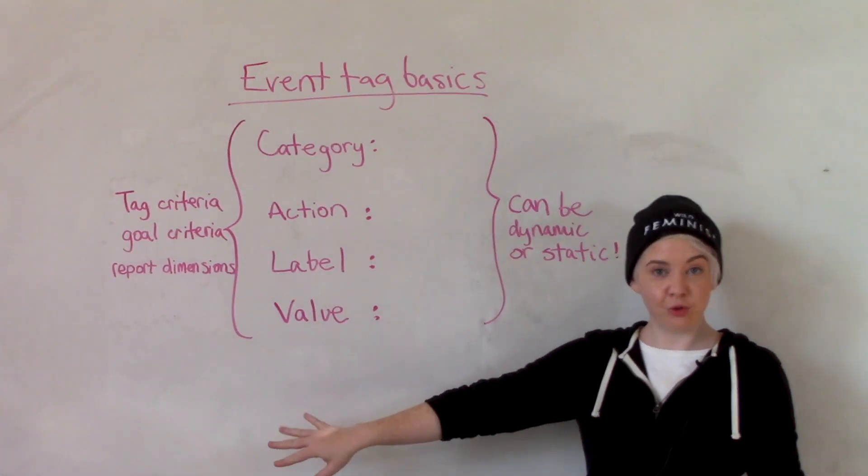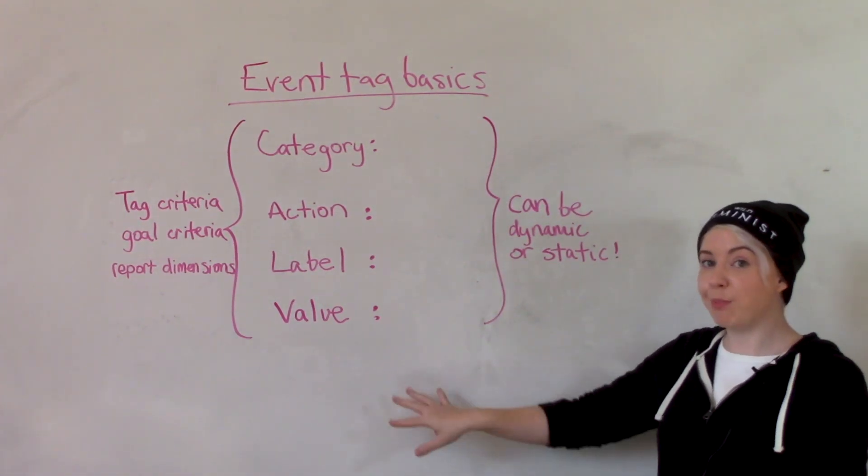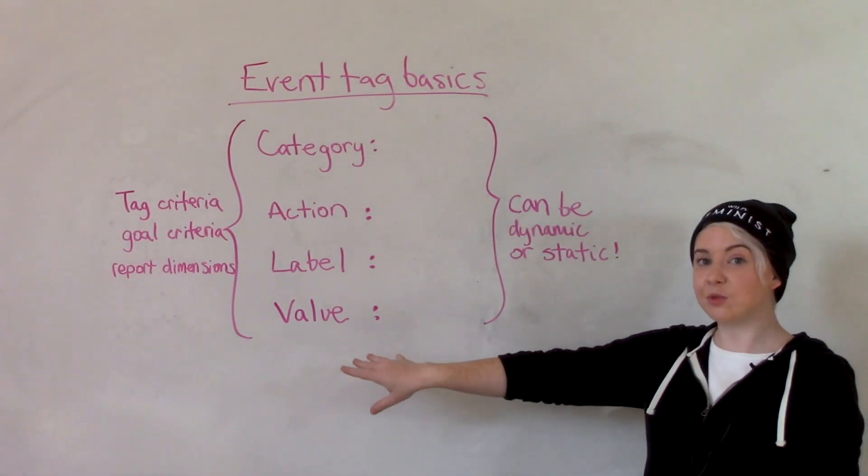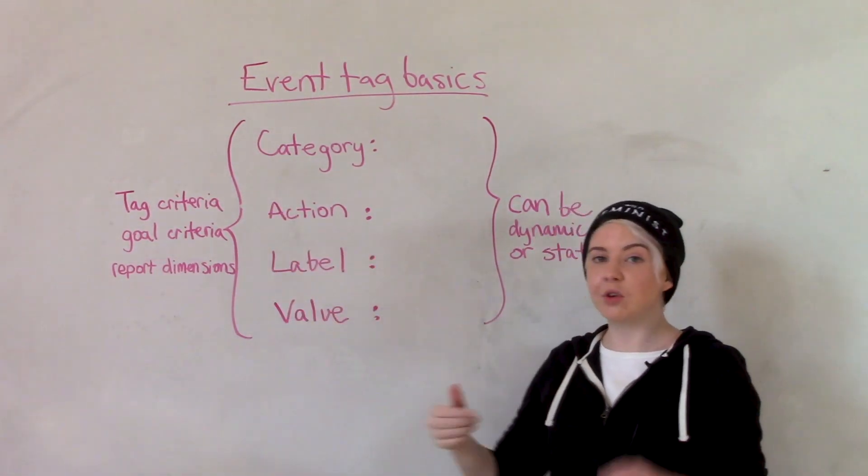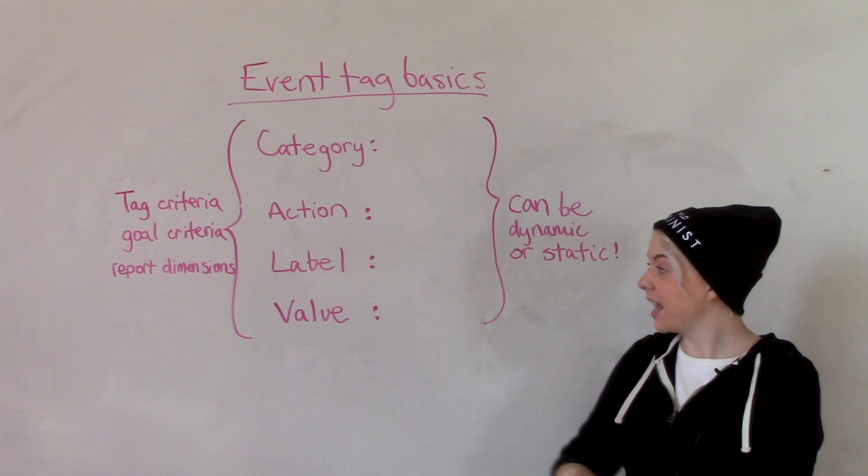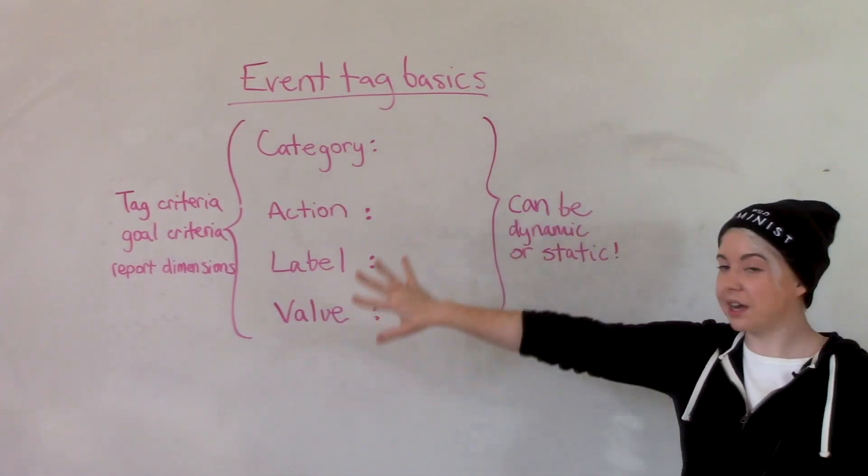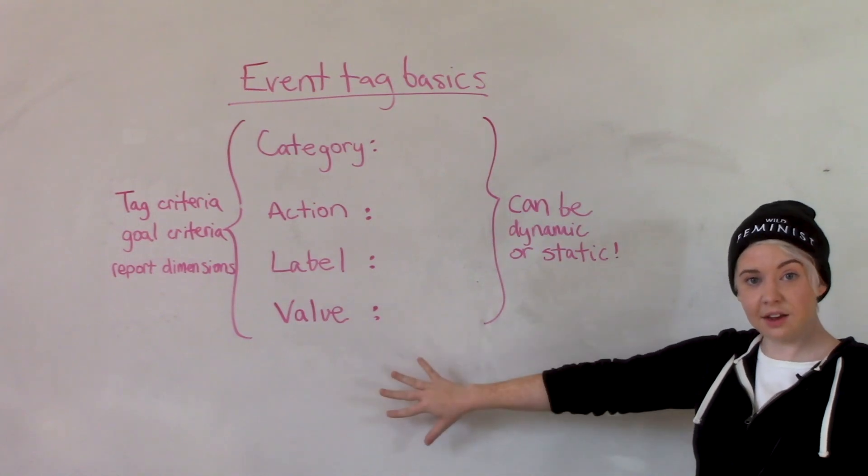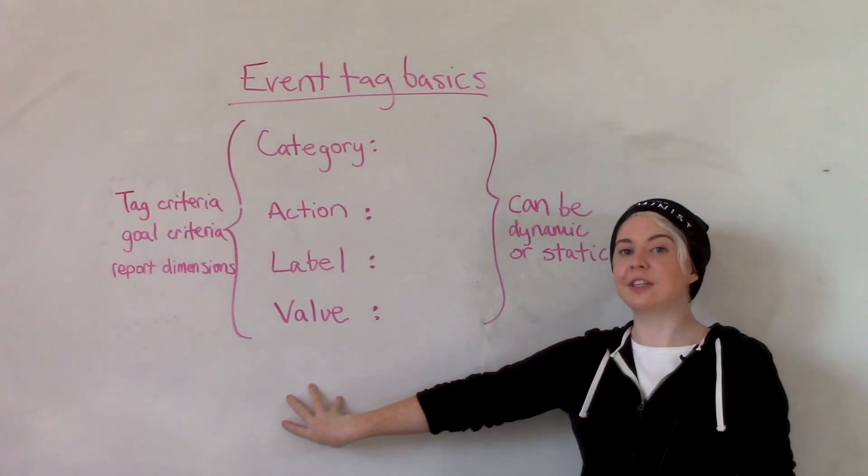Today, I'm not going to talk about triggers. I'm just going to talk about events. Event tags are the most important thing that you can do to get really right, because they're not just your tag criteria. They're also your goal criteria in Google Analytics, and they're your reporting dimensions. So creating a meaningful taxonomy with how you want to sort these items and how you'd like to report on them is the best future-proofing step that you can take.